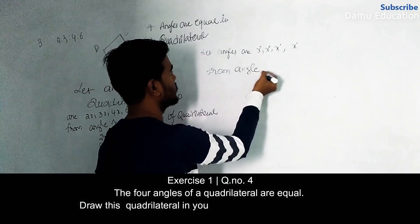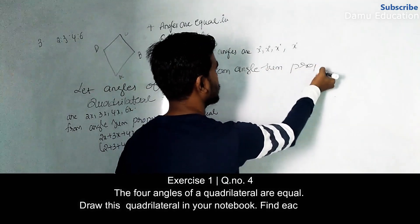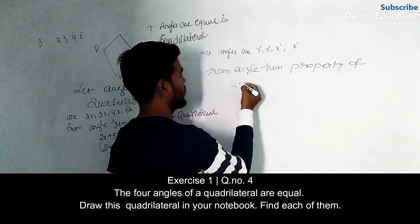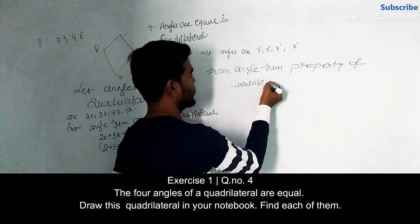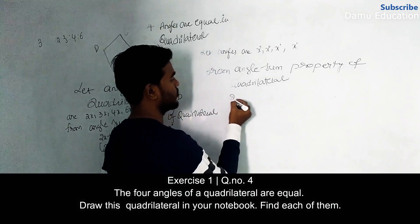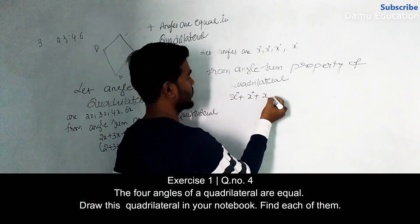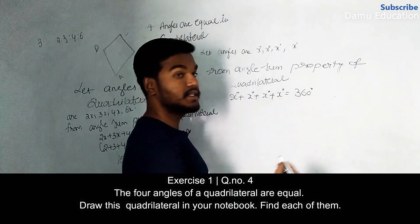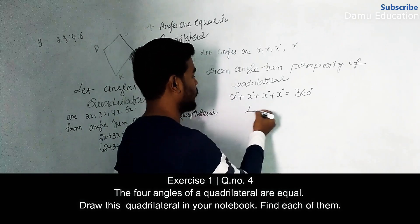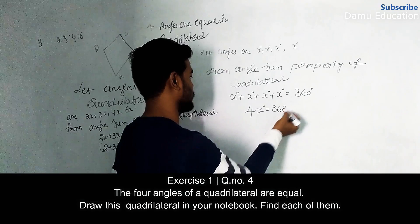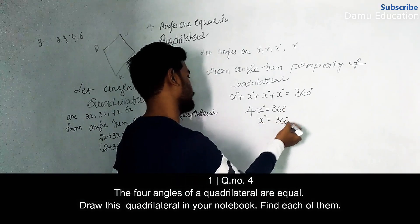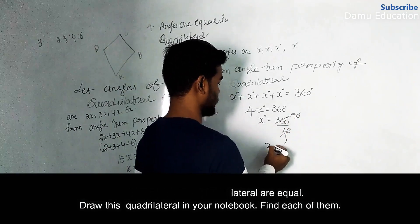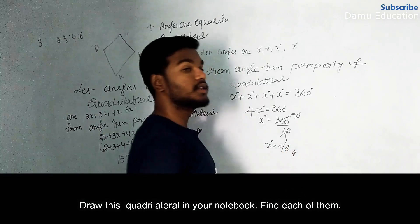From the angle sum property of a quadrilateral: x + x + x + x = 360 degrees, which gives us 4x = 360 degrees. Therefore x = 360 ÷ 4 = 90 degrees.